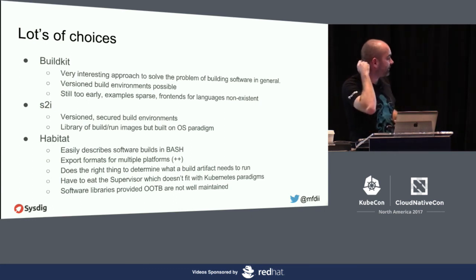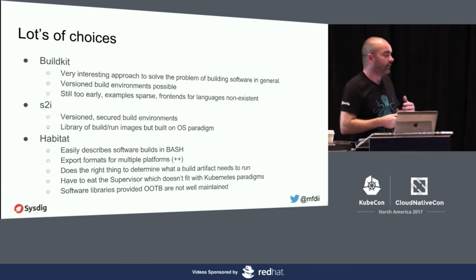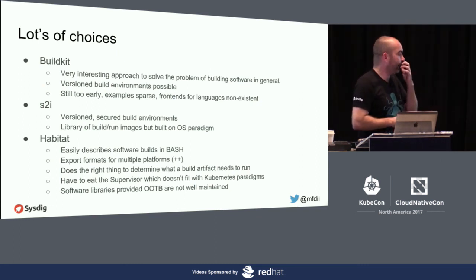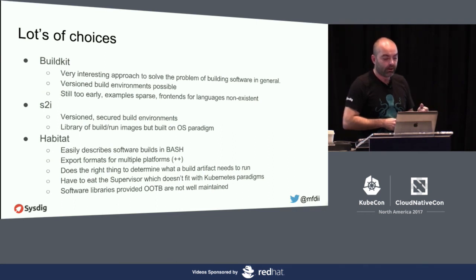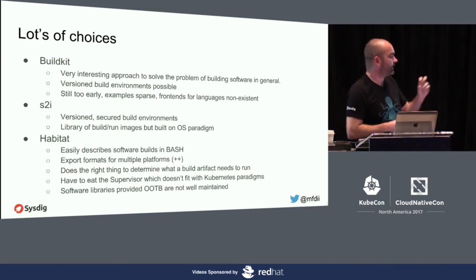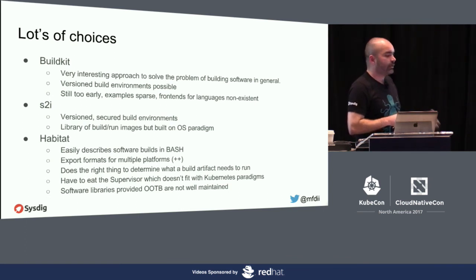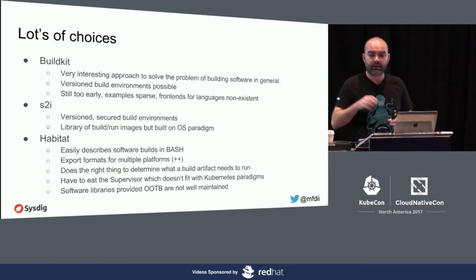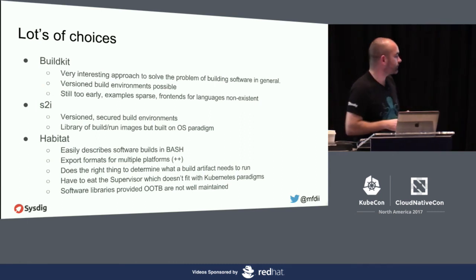Source to Image has versioned, secure build environments and a library of build and run images available, but they're all built upon the operating system paradigm since they come from Red Hat. Habitat is very interesting — it easily describes software builds in Bash, has export formats for multiple platforms which is really powerful, and does the right thing to determine what a build artifact needs to run. The challenge is you always get the supervisor whether you want it or not, and it doesn't always fit Kubernetes paradigms. The Habitat team created a Kubernetes operator to address that.